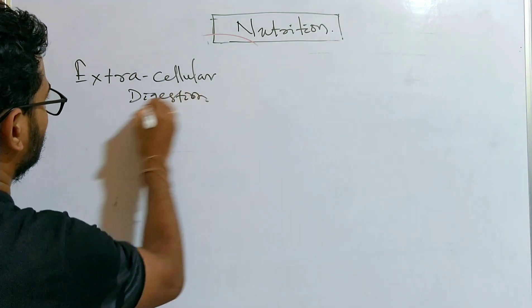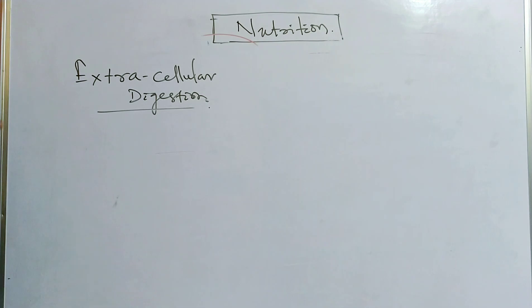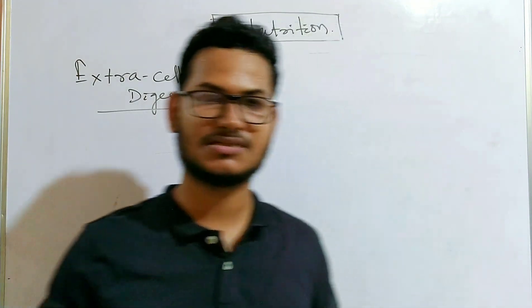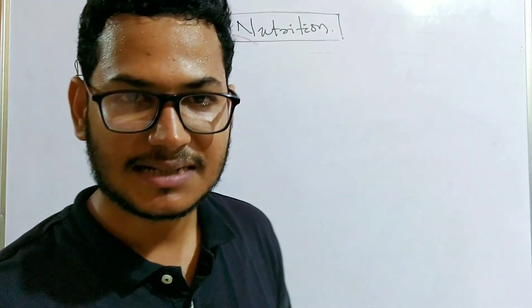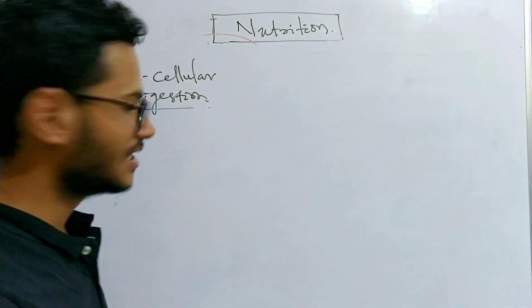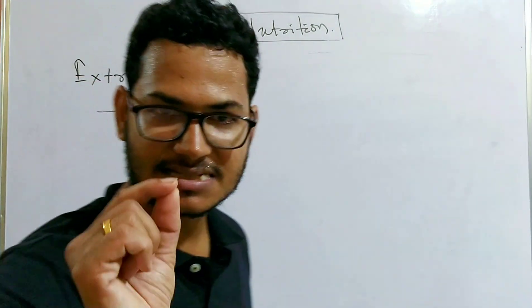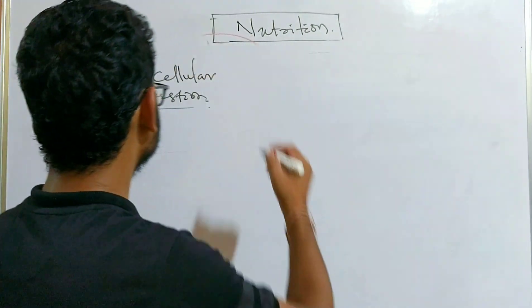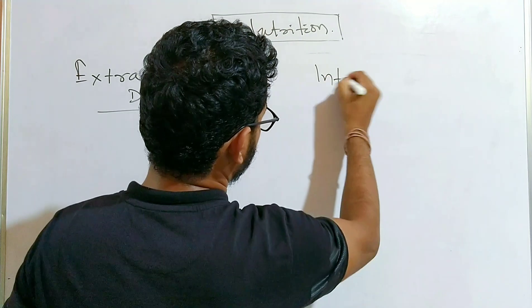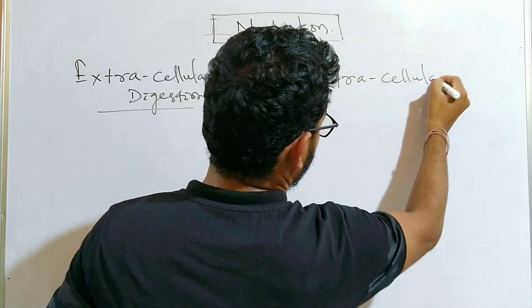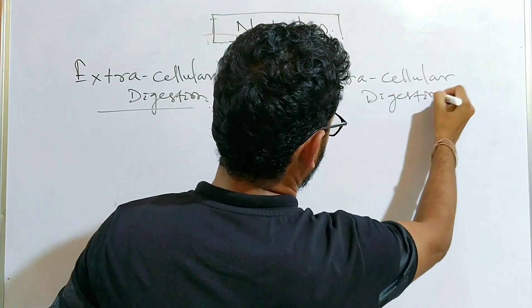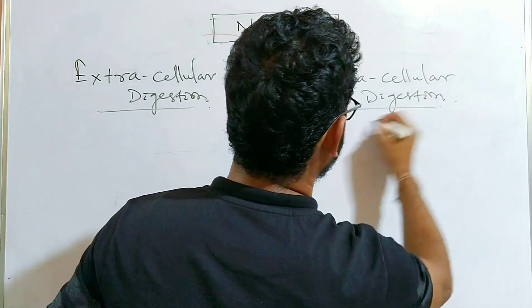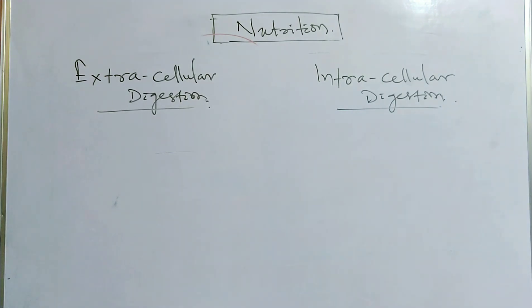In the case of unicellular organisms like protozoa and porifera, the type of digestion is intracellular, which means digestion takes place inside a single cell. This is called intracellular digestion.